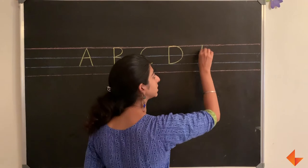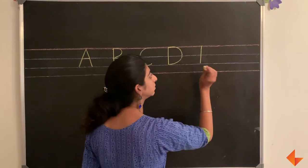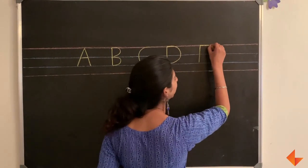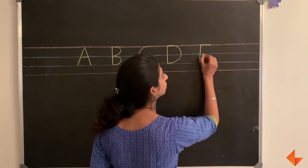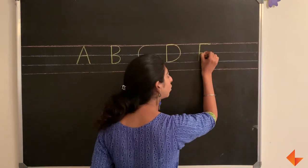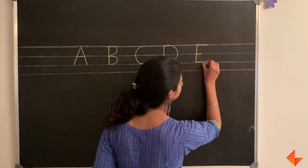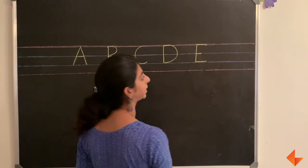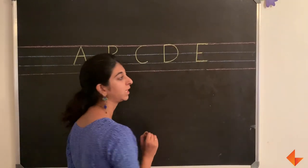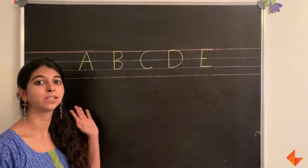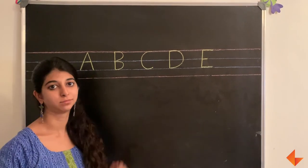To write the letter E, draw a standing line, draw a sleeping line, draw a small sleeping line, draw another sleeping line. This is how you write the letters A to E.